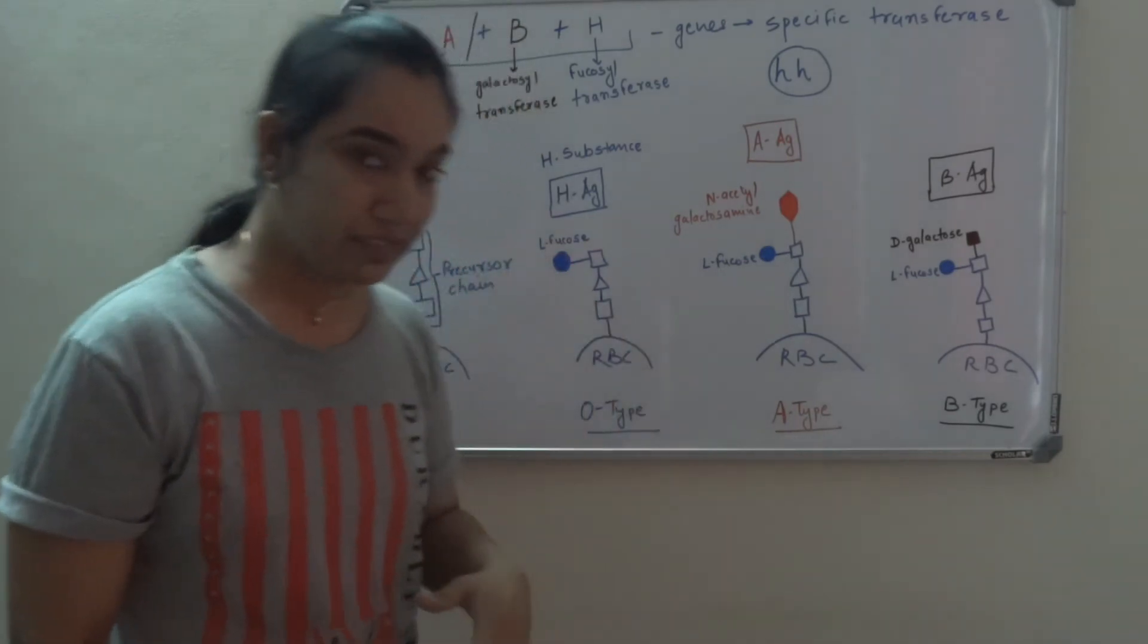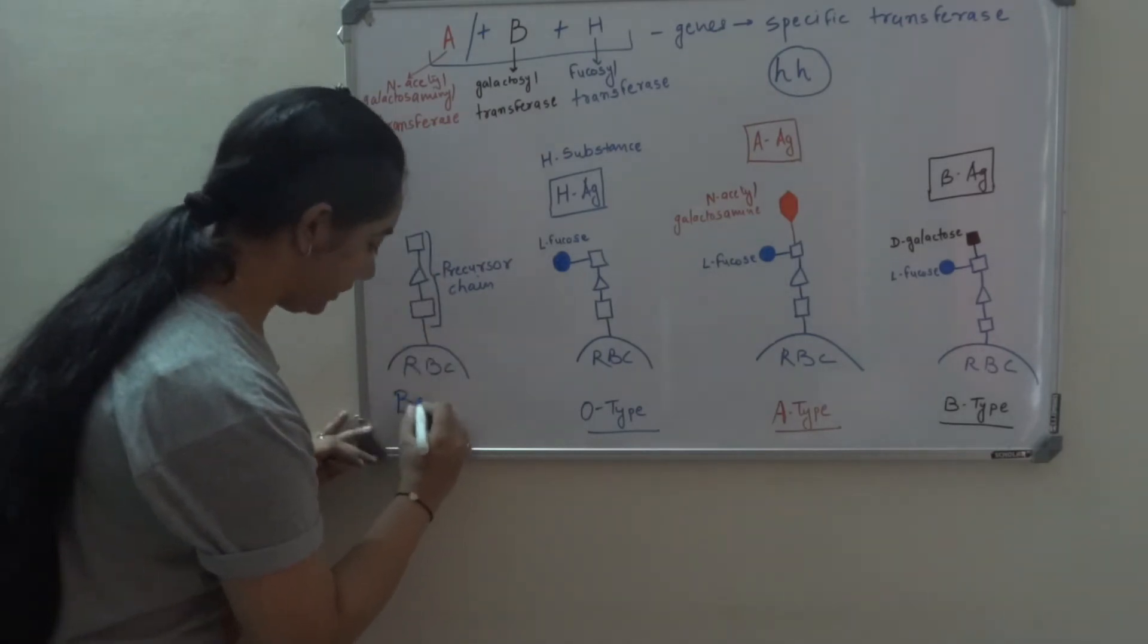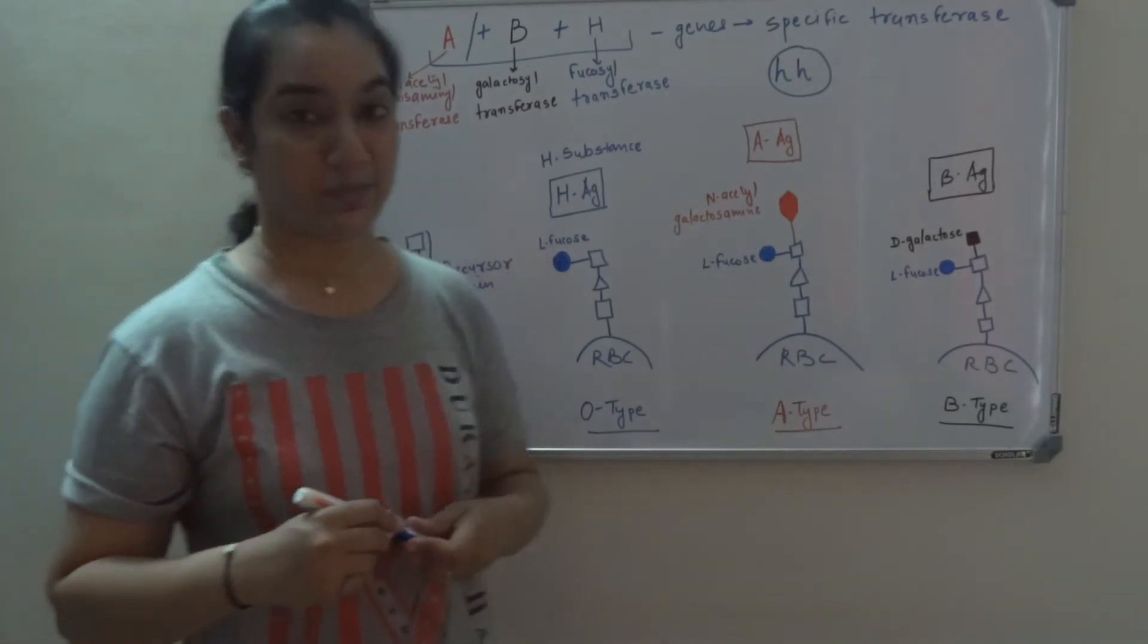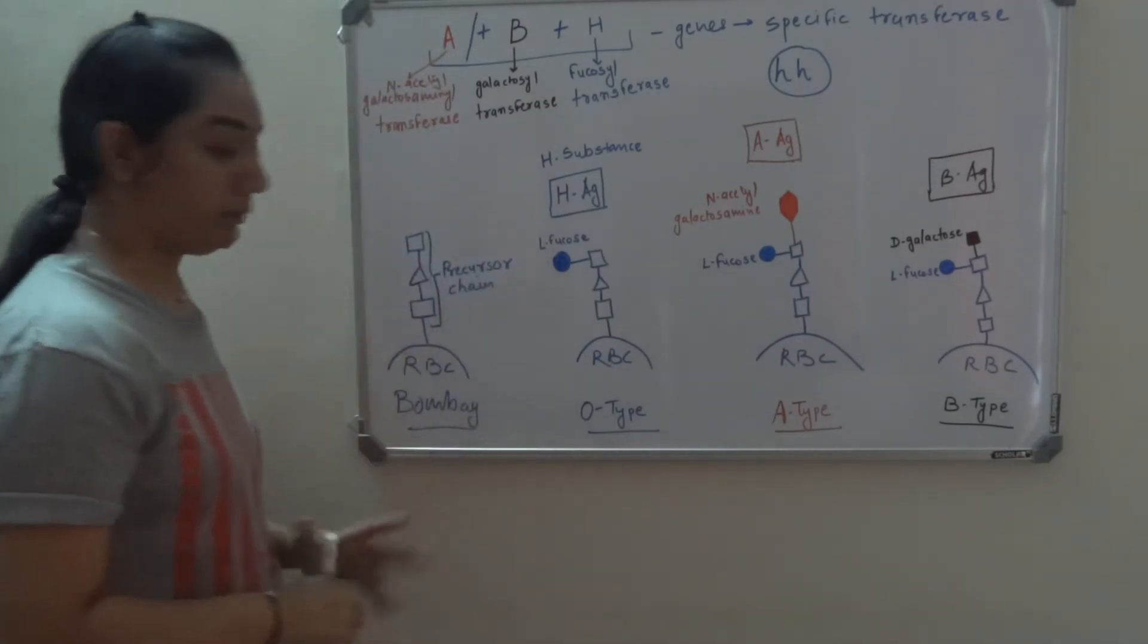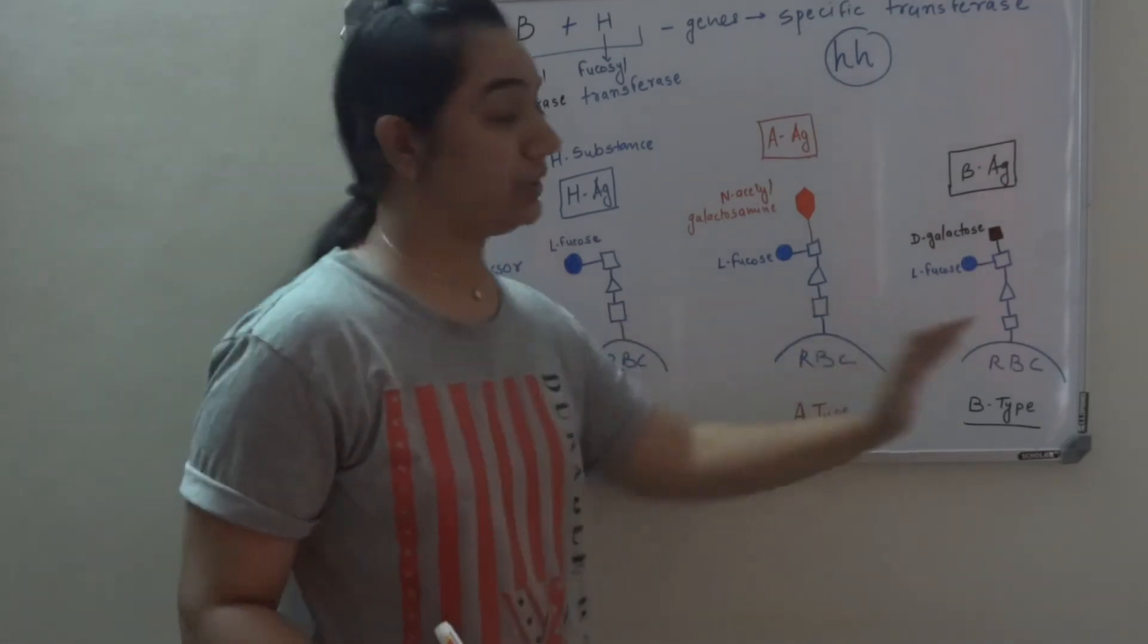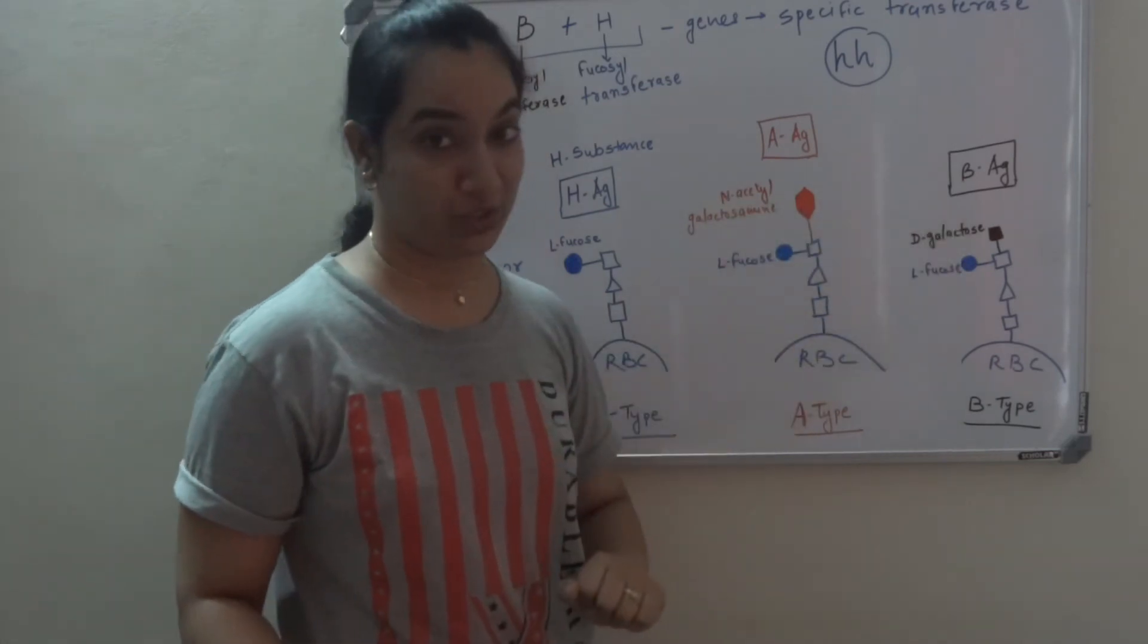But what happens in case of Bombay blood group? Bombay means there is nothing present on RBC, not even H substance. So in case of Bombay blood group, individuals will have antibody against all three antigens, H antigen, A antigen and B antigen.